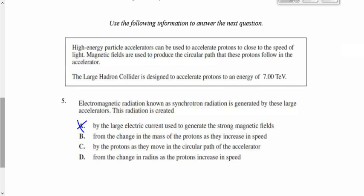By large electric current generating magnetic field? No. From the change in the mass of the protons as they increase in speed? No. That actually happens. As these protons accelerate to close to the speed of light, they get a lot heavier. But that's not what generates the EMR. Isn't that right? Yeah. As more and more energy is pumped into it, less and less of that energy goes into speeding it up and more of it gets converted to mass. So as you get infinitely close to the speed of light, you get infinitely close to the amount of energy that's being pumped in being converted to mass rather than being converted to kinetic energy. Yeah, that's right. That's why you can't go faster than the speed of light.